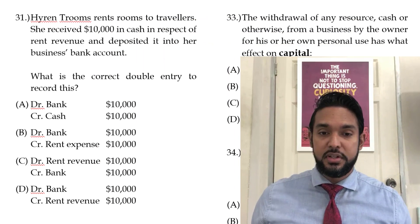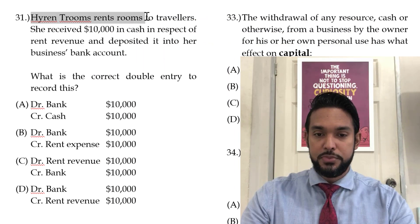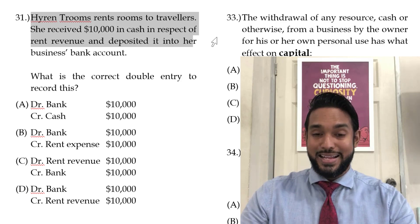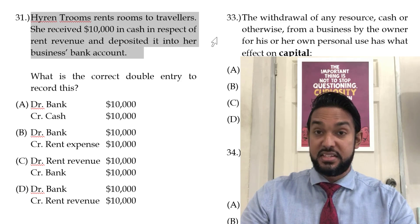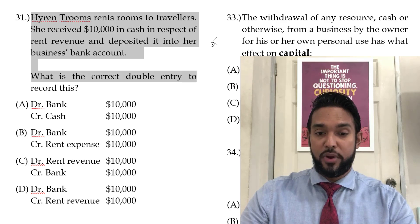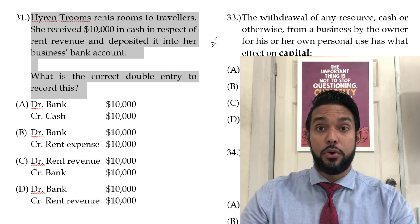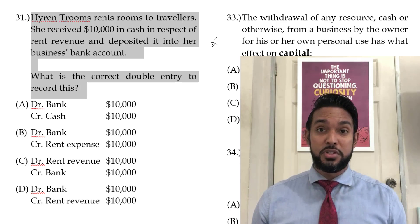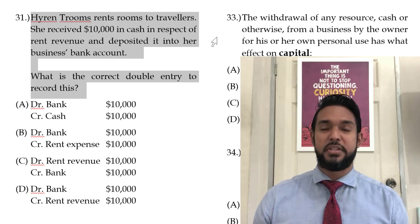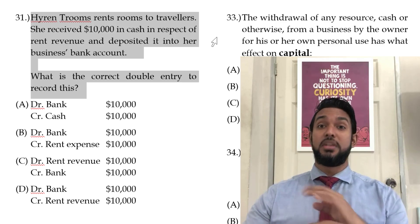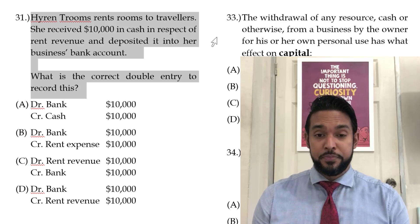Let's take a look at question 31. This is High Rent Rooms — she rents rooms to travelers. She received $10,000 cash in respect of rent revenue and deposited it into her business's bank account. So what is the correct double entry to record this? I know all of you have some issues with double entry and never really quite grasped it, while some of you are double entry bosses.